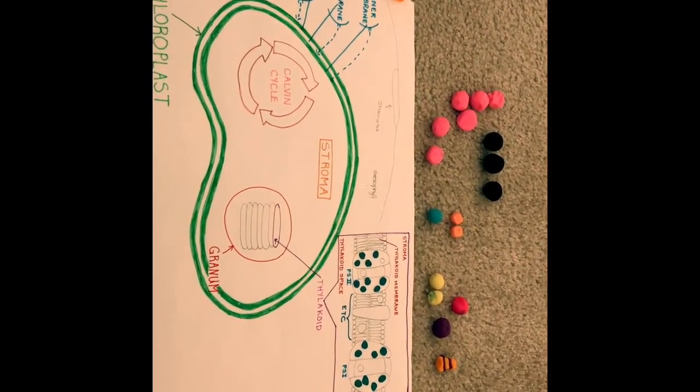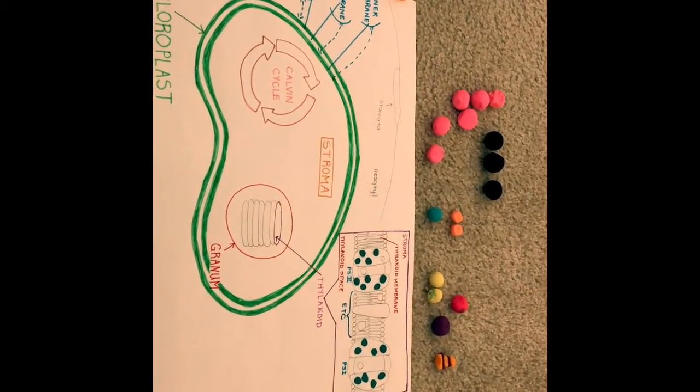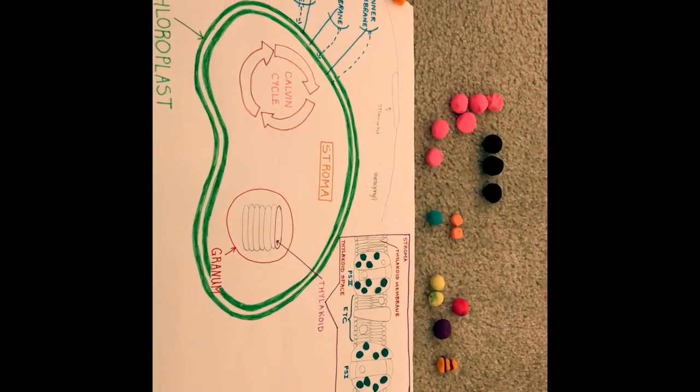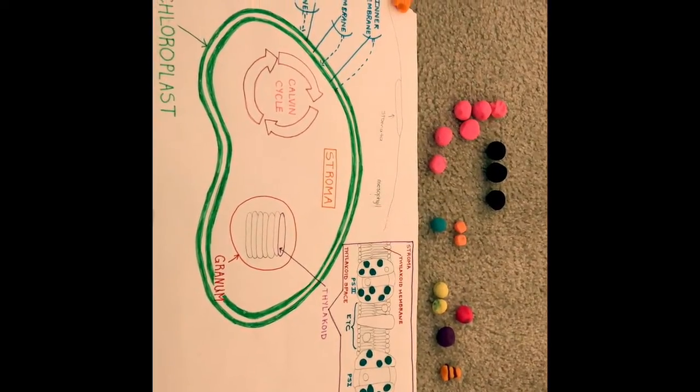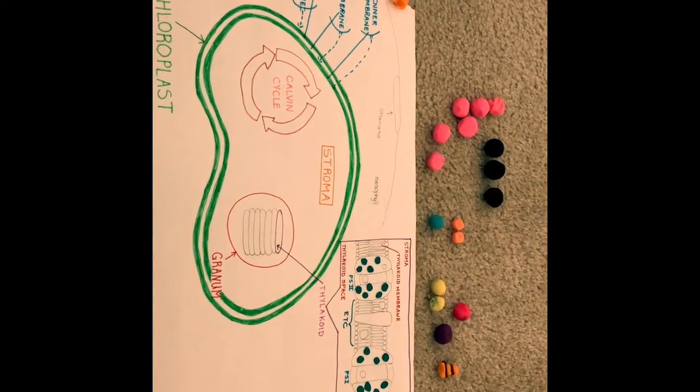You can think of photosynthesis, an anabolic process, as the opposite of cellular respiration, which is a catabolic process. In order for the reaction to occur, as can be seen in the formula for photosynthesis, the plants need three things.